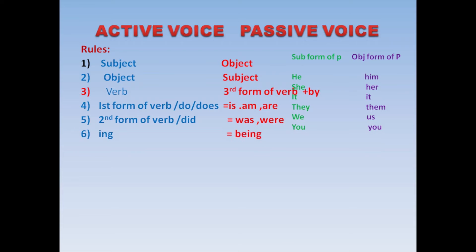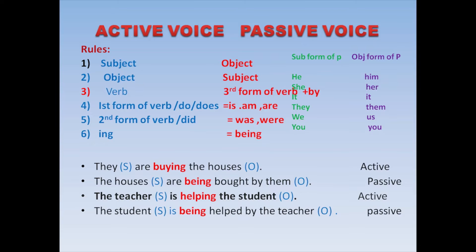Moving to the next sentence: 'Did the mother love the children?' Our fifth rule says if 'did' is there, 'was' or 'were' will be used. 'Did' is replaced with 'were'. Subject 'mother' becomes object. 'The children' object becomes subject: 'Were the children loved by the mother?' Third form of verb and 'by' applied. I hope if you understand it this way, you will have no problem with active voice and passive voice.